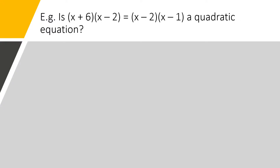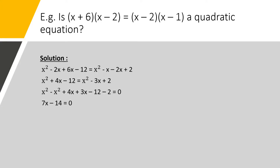Let us solve another example. The question is: is (x plus 6)(x minus 2) equal to (x minus 2)(x minus 1) a quadratic equation? We open the brackets on both sides. We get x squared minus 2x plus 6x minus 12 equal to x squared minus x minus 2x plus 2, which simplifies to x squared plus 4x minus 12 equal to x squared minus 3x plus 2.